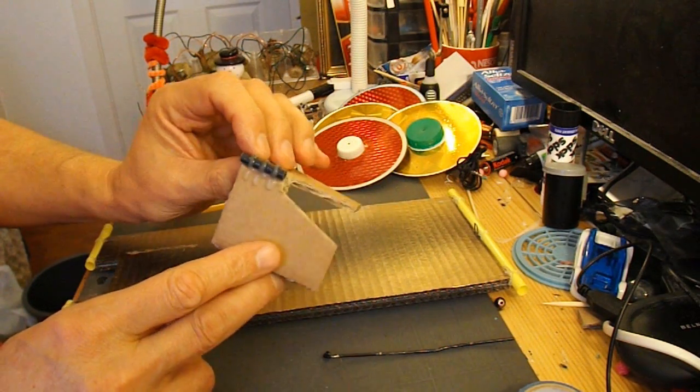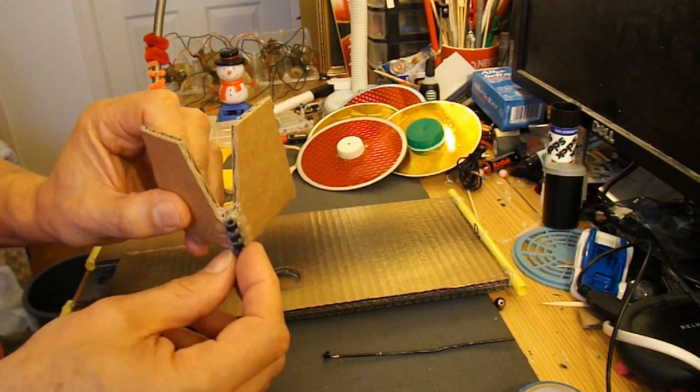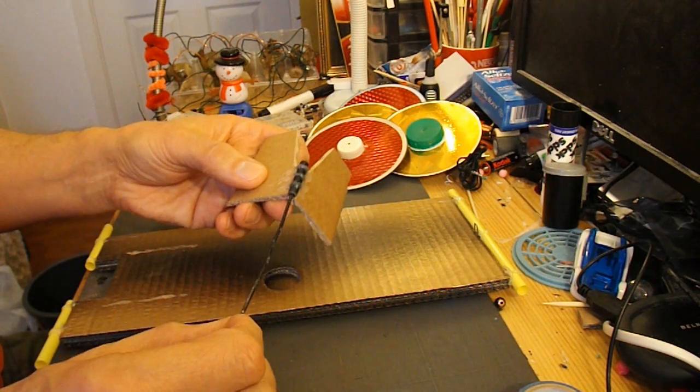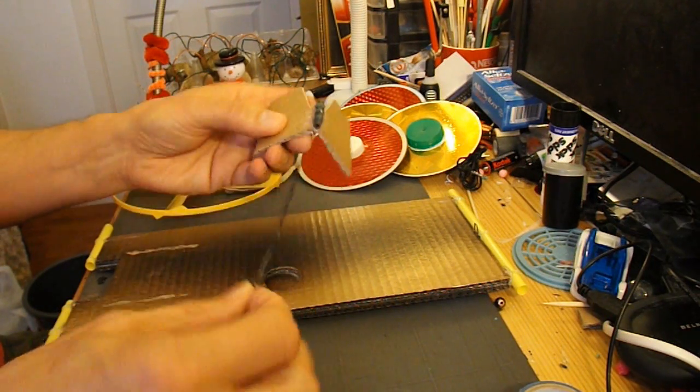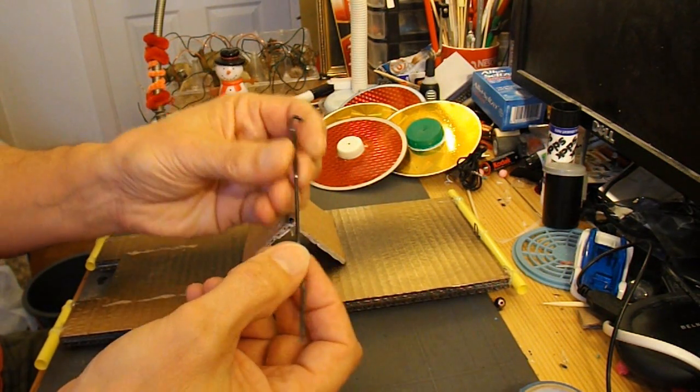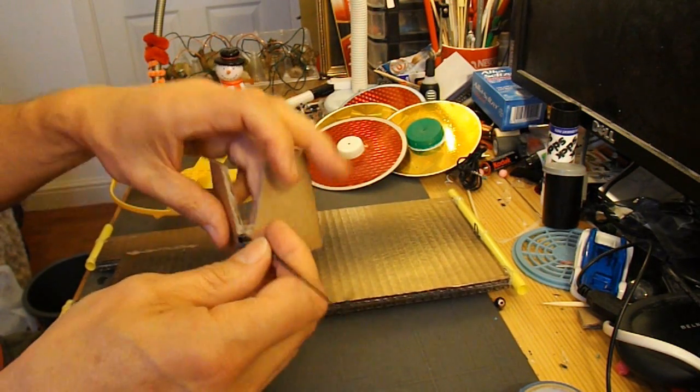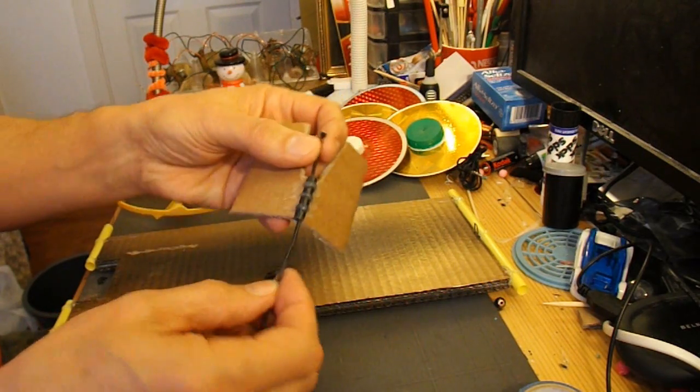I've got a bit of cardboard there that's already got a tube on it for putting the propeller shaft through. I've got a bent bit of bicycle spoke here that will go through there. It's got a hook on it already.